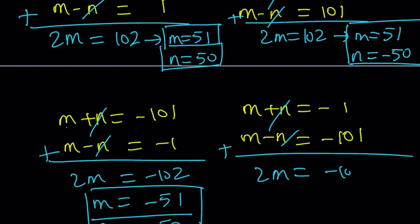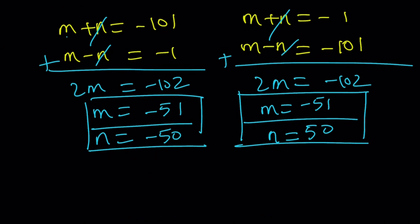And then here, we do the same thing. We get 2m equals negative 102. Again, m value does not change. But the n value will be the opposite. Because if you think about it, n will be 50. And those are going to be all the solutions to this equation.